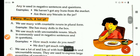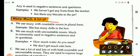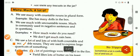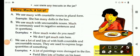Now, let's learn the use of many, much, and a lot of. We use many with countable nouns in plural form. Let's see with an example: she has many dolls in the box. It is a countable noun as well as a plural noun.